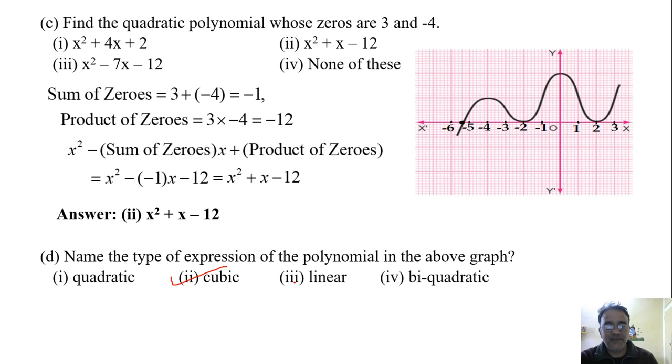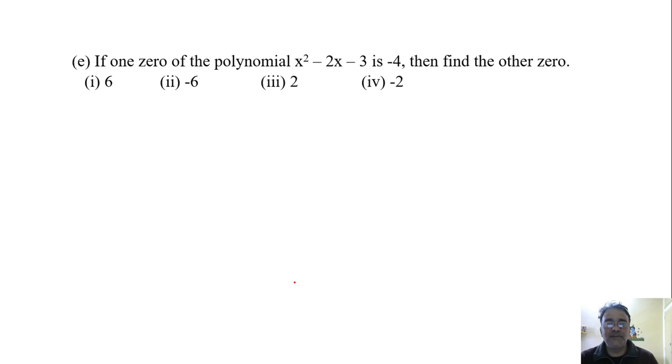Now we'll move to the last question: if one zero of the polynomial x square minus 2x minus 3 is minus 4, then find the other zero. Let the other zero be alpha, and one zero is given as minus 4. What is the sum of zeros formula? Minus b by a, very good. What is the value of a here? 1.